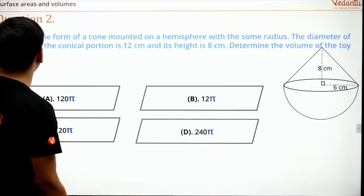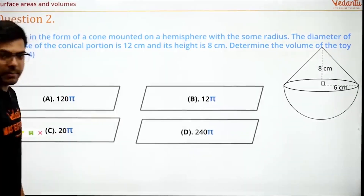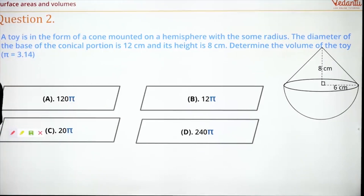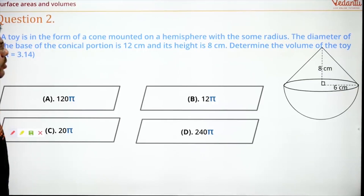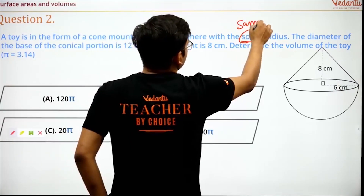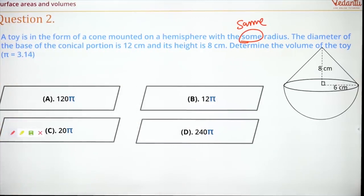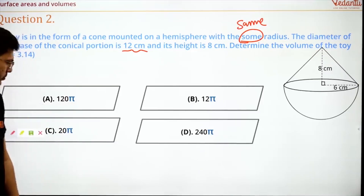Moving on to question two. I'll again give you some time — I want you to answer this. This is again a simple one; you don't have to calculate the value of pi. A toy is in the form of a cone mounted on a hemisphere with the same radius. The diameter of the base of the conical portion is 12 centimeters and the height is 8 centimeters. Determine the volume of the toy.